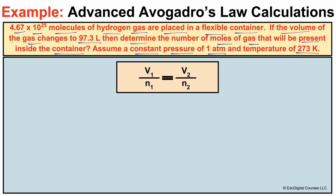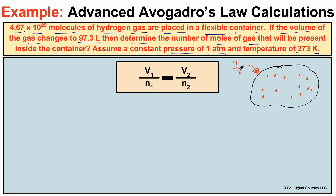We have some sort of flexible container — one that can expand and contract — and inside of this container we have some gas particles, specifically hydrogen gas particles. We're placing hydrogen gas, and keep in mind that hydrogen is diatomic, it's H₂. We know based on the information given that we have 4.67 times 10 to the 25th molecules of this hydrogen gas placed in this flexible container.